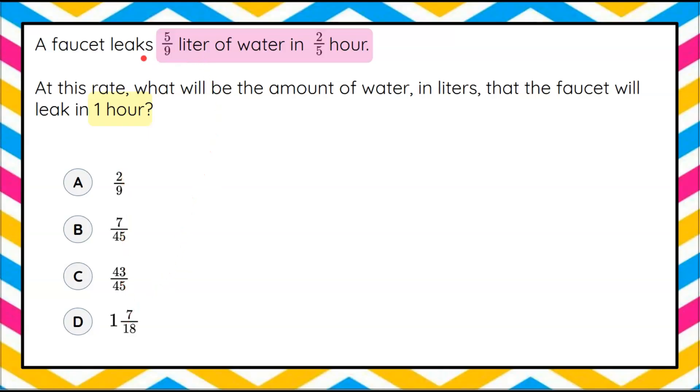So the first thing I'm going to do is understand that this is a rate, liters per hour. So let's write it as a fraction or a ratio, five-ninths in two-fifths of an hour. This is what we call a complex fraction.